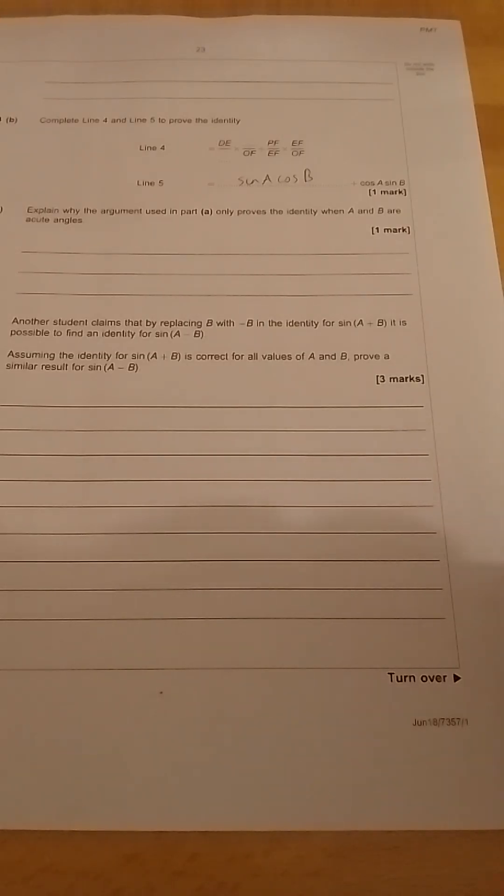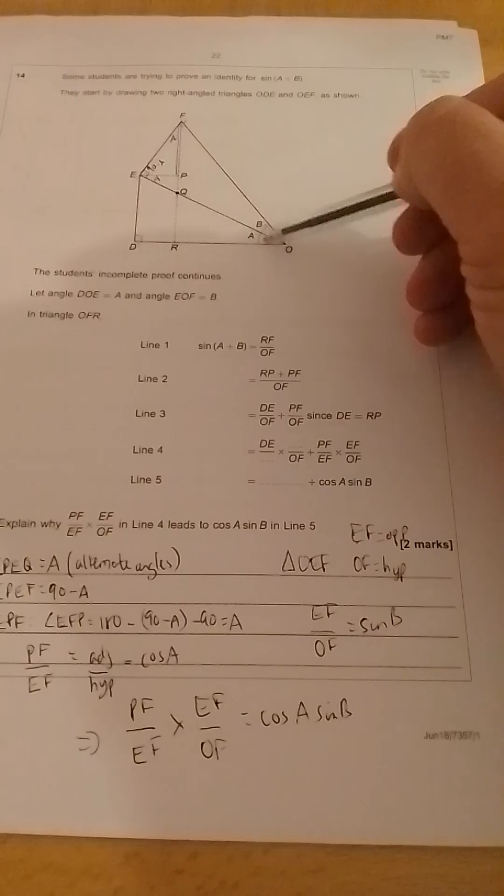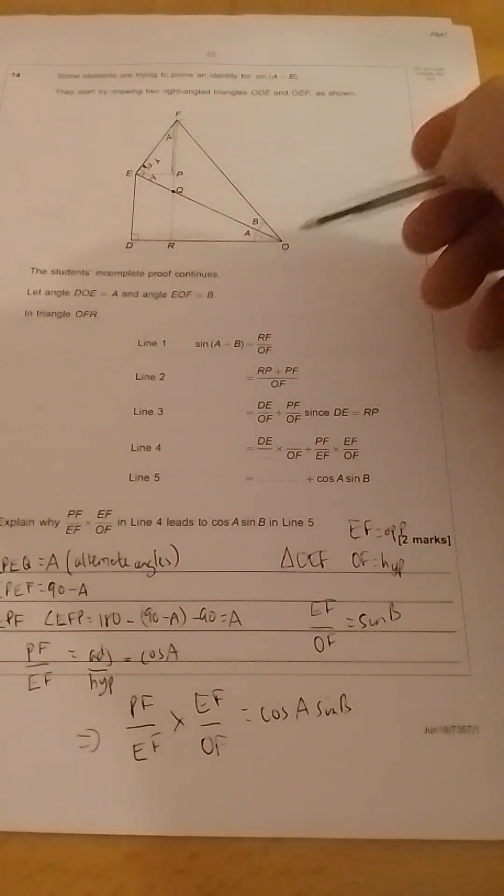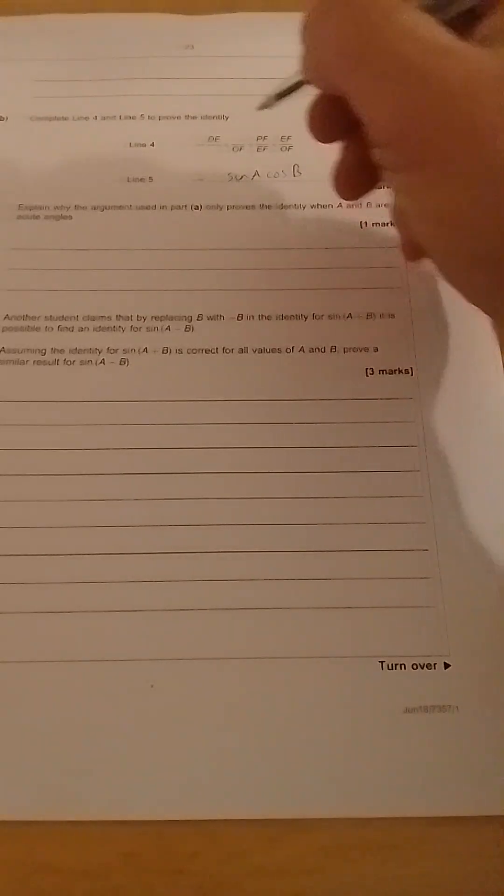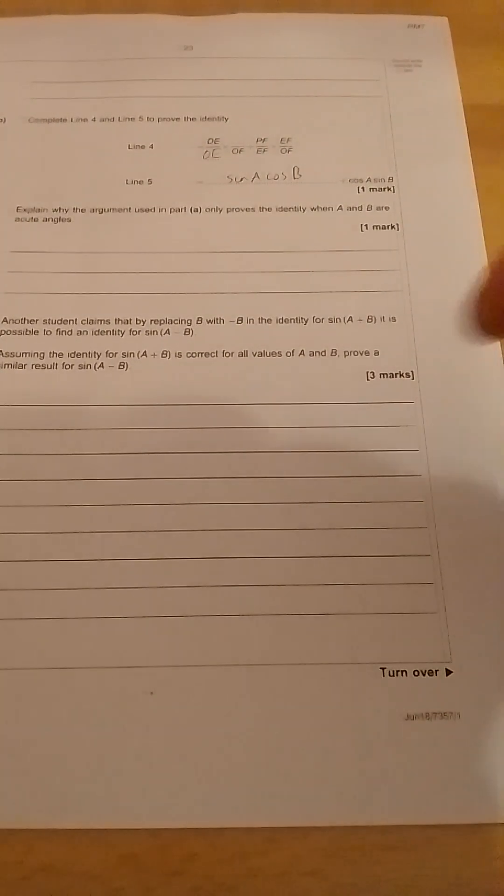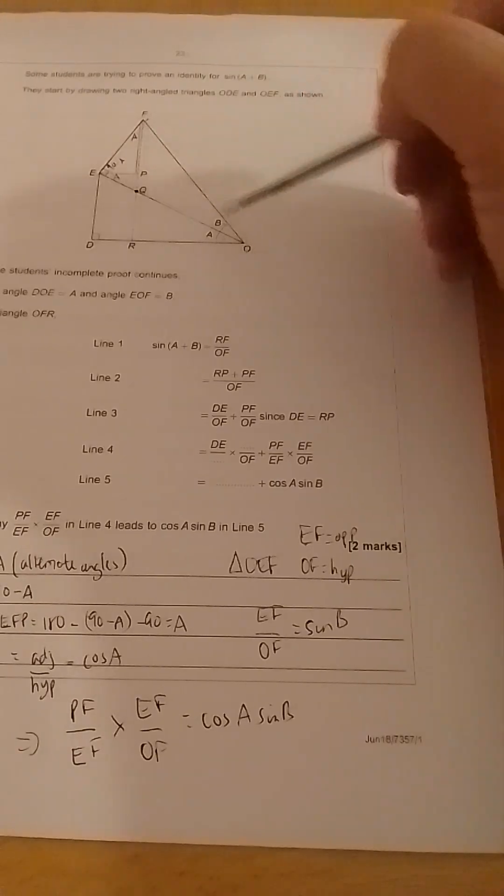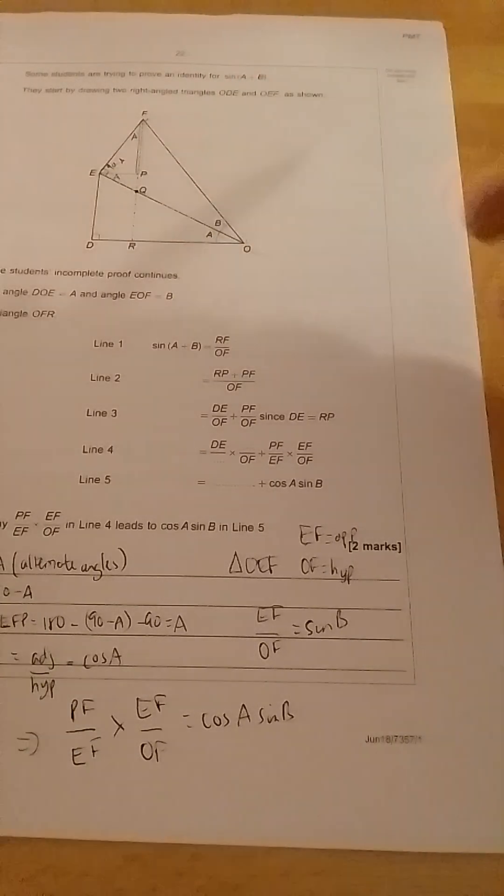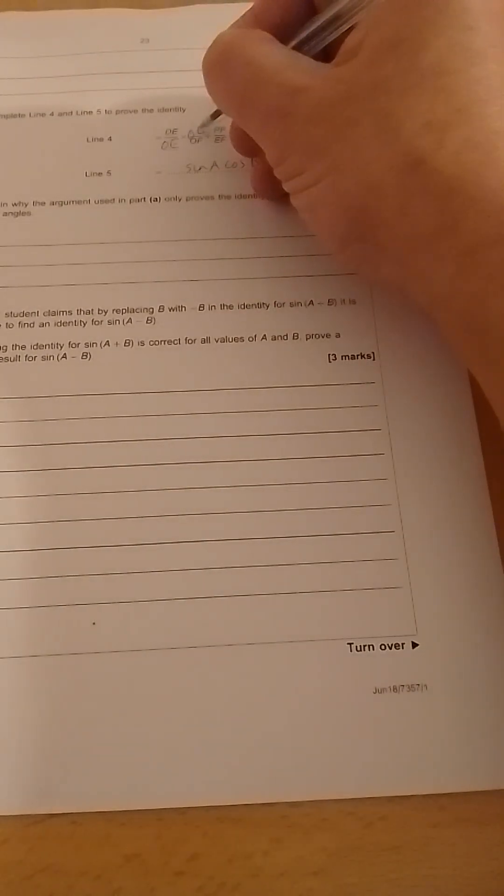If we go back to the diagram for a minute, we've got DE over something and we want to make that sin A. So DE is this side here, which is the opposite of this triangle at the bottom. So the hypotenuse here is OE. So the bottom of this one is OE. Likewise, we want to do cos B, and we have OF on the top. OF is the hypotenuse of this triangle, so the adjacent here is OE. So the bottom of the second one, top of the second one is OE.